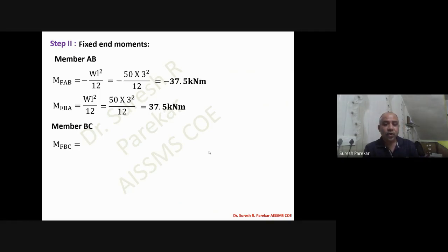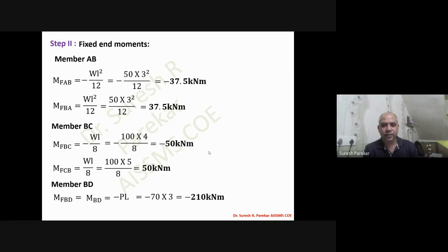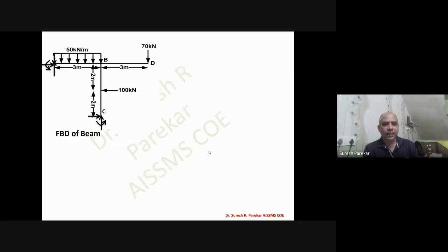For member BC, we have minus wL/8 and plus wL/8, giving minus 50 and plus 50 kN·m. For member BD, we have minus P·L which is anti-clockwise, so the fixed end moment is minus P·L = minus 210 kN·m.